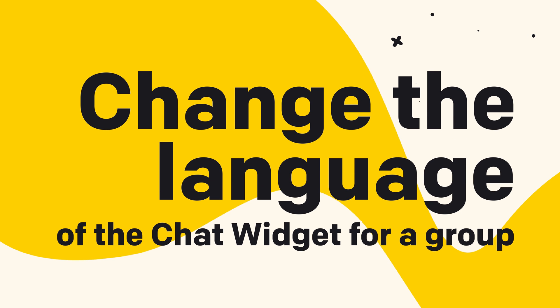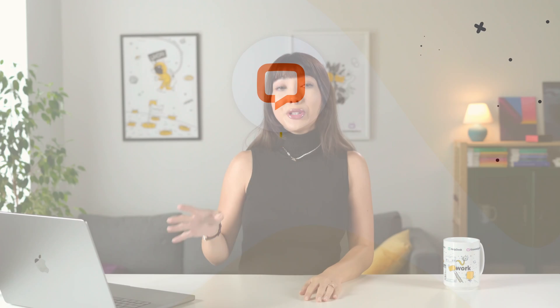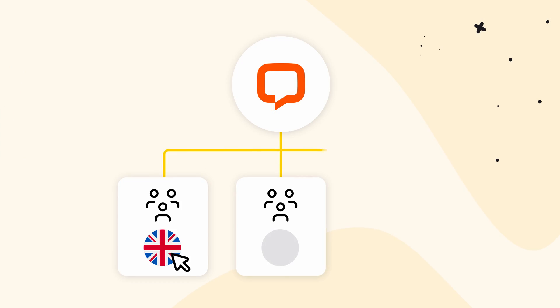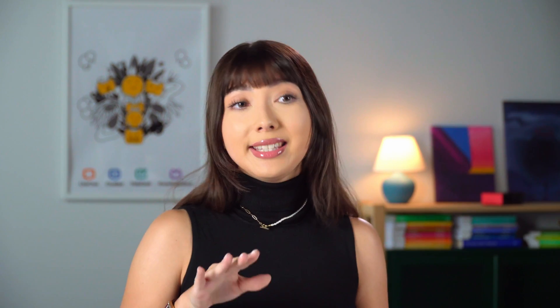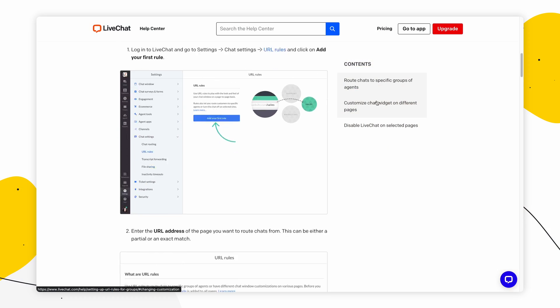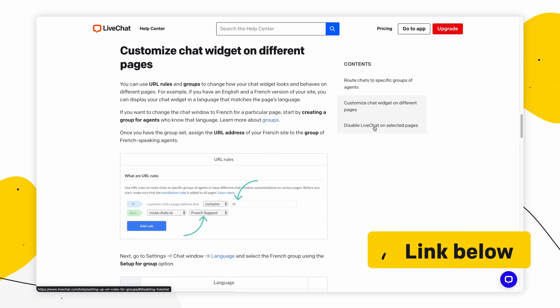Now let's see how to change the language of the chat widget for a group. You can offer your live chat in several different languages by setting up different languages for your groups. To do this you need to create a group for each language you want to cover and then set the correct language for them. If you don't have your groups created yet, you can assign your groups to corresponding pages using URLs.